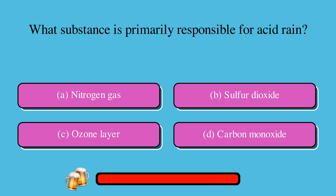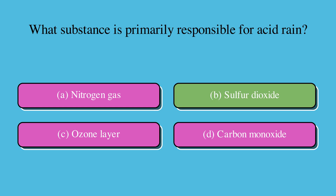What substance is primarily responsible for acid rain? A. Nitrogen gas, B. Sulfur dioxide, C. Ozone layer, or D. Carbon monoxide? The correct answer is B. Sulfur dioxide.